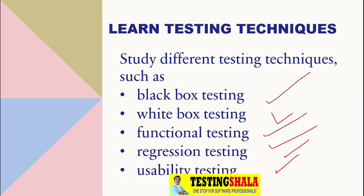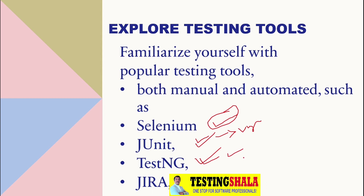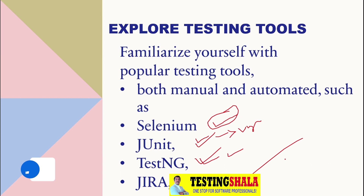The next step is you should also learn about what various tools are available in the software testing field. You should pick some testing tools covering both automation and manual — something like Selenium, JUnit, TestNG. Selenium is for web UI automation, JUnit for unit testing automation, TestNG we normally use for generation of reports, and Jira we use for defect management or test management. Learning some of these tools is going to add a lot of value to your career as a software tester.